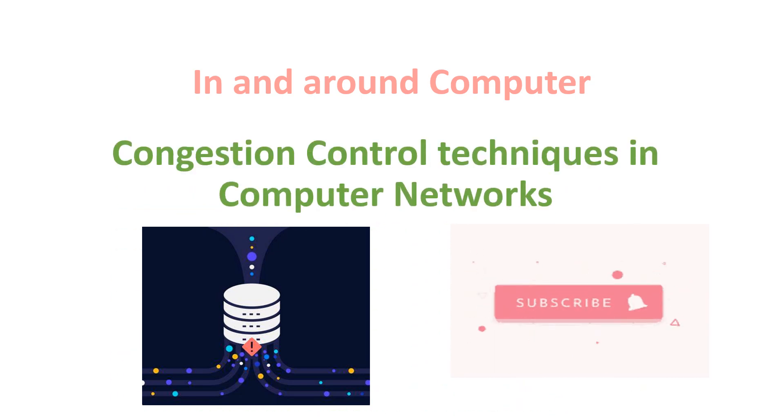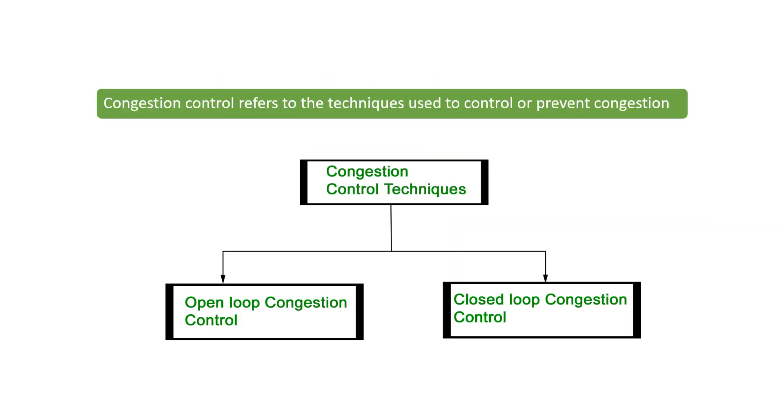Welcome to In and Around Computer. In this video we are going to see the congestion control techniques in computer networks. Congestion in networks occurs in cases of traffic overloading when a link or a network node is handling data in excess of its capacity. Congestion control refers to techniques used to control or prevent congestion, and these techniques are of two types: open loop congestion control and closed loop congestion control.